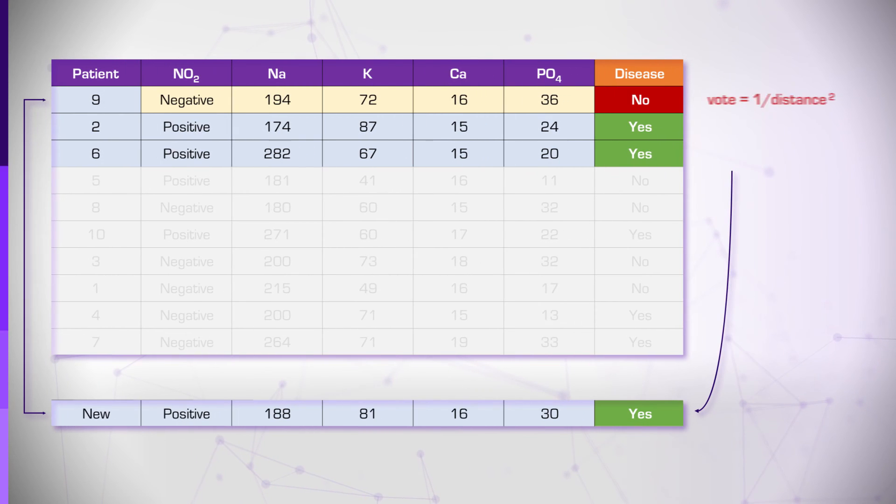For example, each neighbor's vote will be counted as 1 divided by its distance to our new patient squared. If we do that, miraculously, our new patient is now healthy.